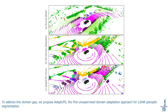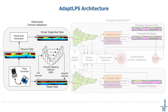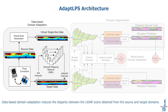To address this domain gap, we propose ADAPT LPS — the first unsupervised domain adaptation approach for LiDAR Panoptic Segmentation. We address the domain gap using two complementary strategies: data-based domain adaptation and model-based domain adaptation. Data-based domain adaptation reduces the disparity between LiDAR scans obtained from the source and target domains.